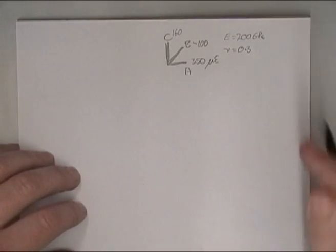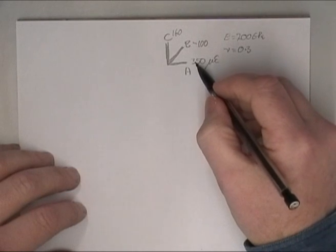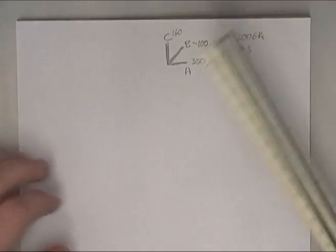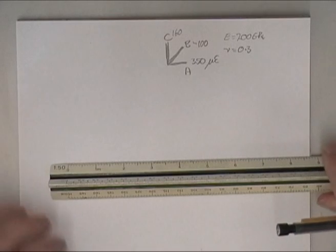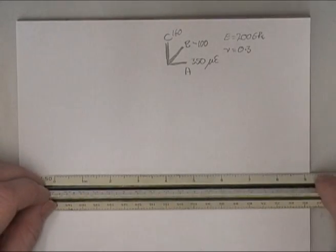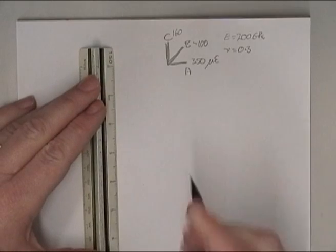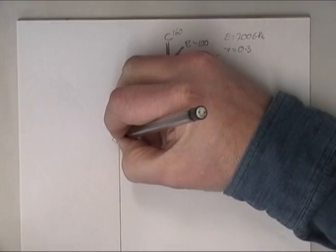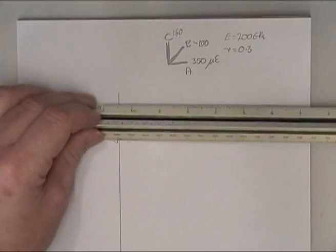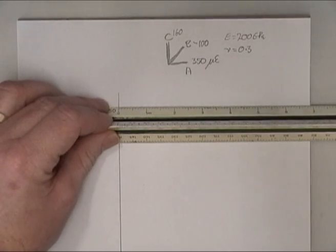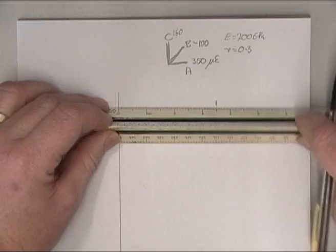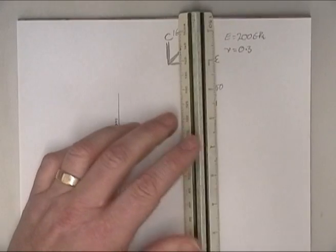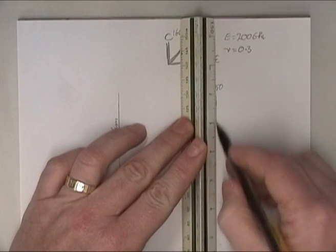So to draw strain circles, we need to draw values of strains at these various strain values: 350, minus 100, and plus 160. Strain circles only have a horizontal scale, so we only need to scale horizontally across a page. We'll start with a datum line about here, and we'll label this the datum. We need to measure off here our values, so we'll come off here at 350, and this is A, and that is 350. So we put a line through there.